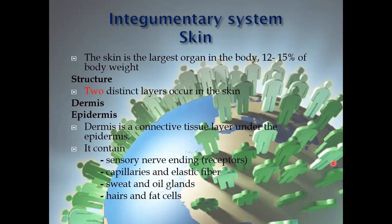Now I'm going to discuss the structure of the skin. There are two distinct layers: the dermis and the epidermis. The epidermis is the outermost layer, which is a protective covering of the body. Next to the epidermis is the dermis. The dermis is a connective tissue layer under the epidermis. It contains sensory nerve endings, capillaries, elastic fibers, sweat and oil glands, hairs, and fat cells.